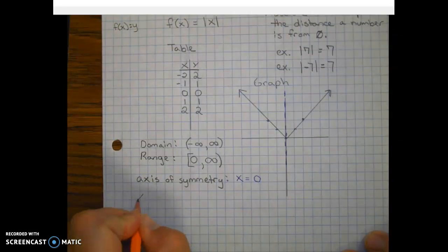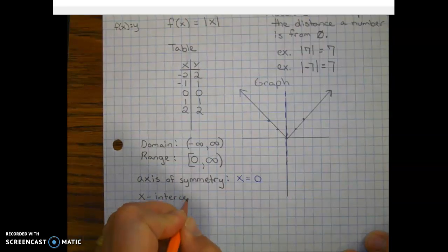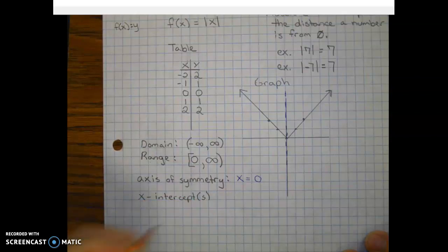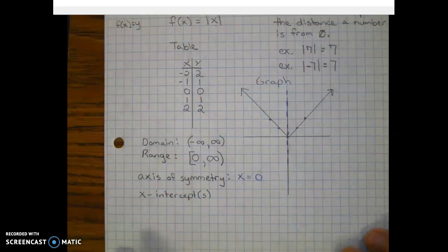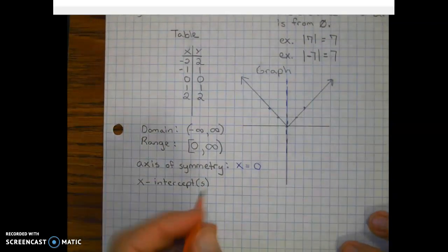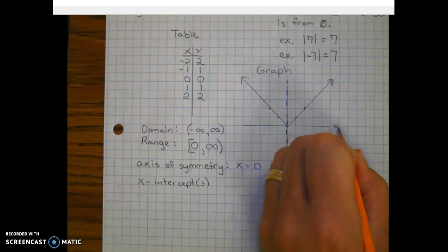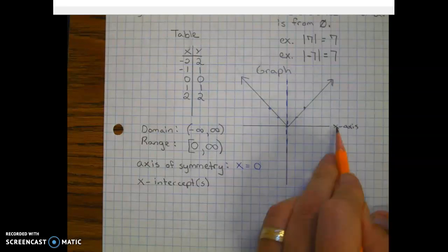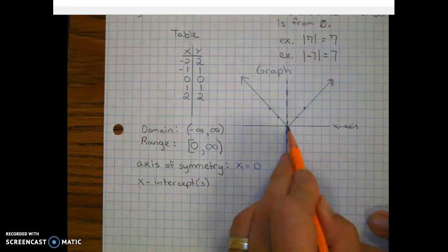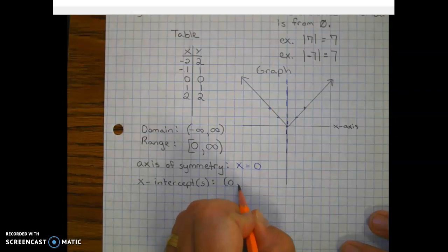Let's take a look at our x-intercepts. And I put parentheses around the s. In case you didn't know from English, that means there could be one or there could be more than one. So in this case, as we look at the x-axis right here, it only crosses or touches in one point. And that point is zero, zero. So our x-intercept, in this case, is zero, zero.